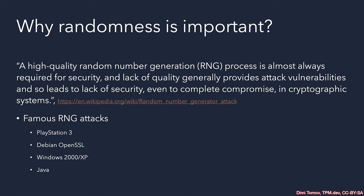Randomness is important to cryptography because computers are really good at producing the same output when we provide them the same input. For cryptography it is important to have guaranteed difference in our keys and in the output of the cryptographic operations. For this we have some source of randomness and a cryptographic algorithm that is usually an implementation of different mathematical operations.